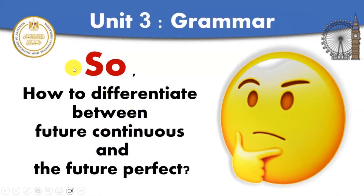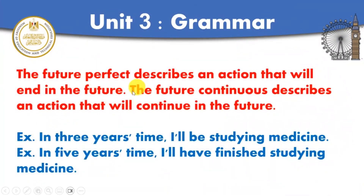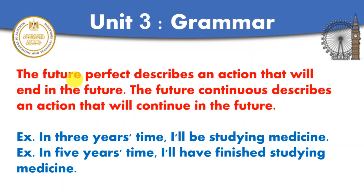Now let's differentiate between the future continuous and the future perfect. The future perfect describes an action that will end at a specific time in the future. But the future continuous describes an action that will continue in the future. By that time, something will have ended — that's the future perfect. But the future continuous means something will continue.